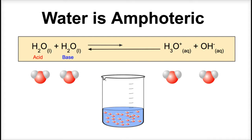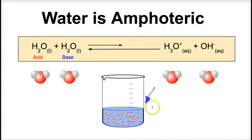Let's take a look at an example. Let's suppose we have a beaker of water — this can be representative of any quantity of water: a beaker, a glass, a bathtub, or a lake of water. On a microscopic level, some of these water molecules act as an acid and some act as a base. According to the Brønsted-Lowry model, acids donate H+ or protons, and bases accept H+ or protons.